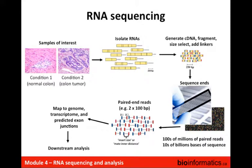Those fragments were then flowed across an Illumina flow cell, which is shown here with eight lanes. The Illumina instrument generated hundreds of millions of paired-end reads, which comes out to tens of billions of bases of sequence. What's being depicted here is a cartoon version of a paired-end read — a blue and a red box connected by a dot — representing read 1 and read 2 of a read pair with some space in between them, variably called the insert size or mate inter-distance.